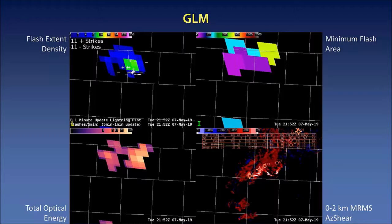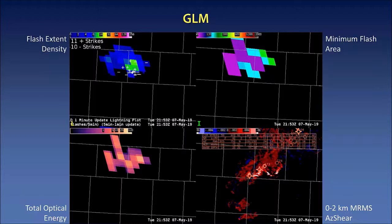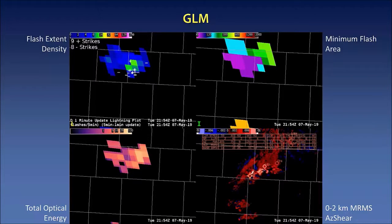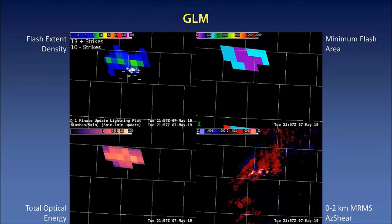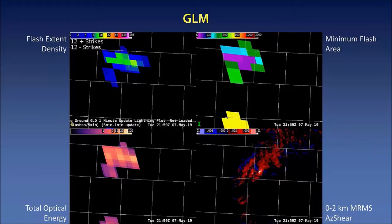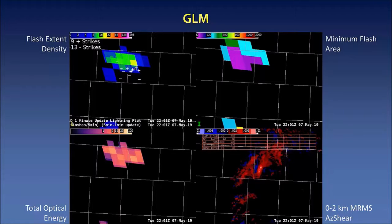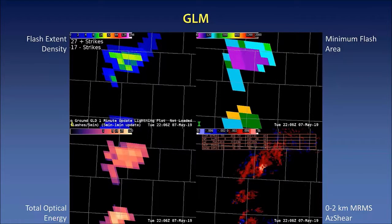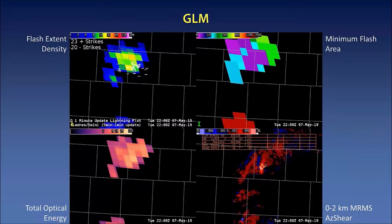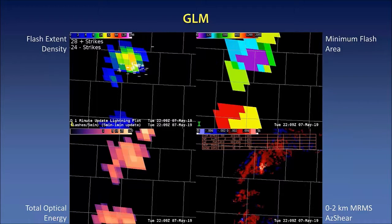We're going to take a look at what happens in time before the Tulia supercell produced a tornado report. We're looking at about 20 minutes before the first report came in. The thing to notice is that in the top left with the flash extent density, it starts increasing from these greens, which are roughly around 10 flashes. And then as we move forward in time, it starts picking up to where we start getting some yellows and some oranges. With the minimum flash area, the majority of these flashes remain very strong and very small in the area where we're seeing the increase in flash extent density.